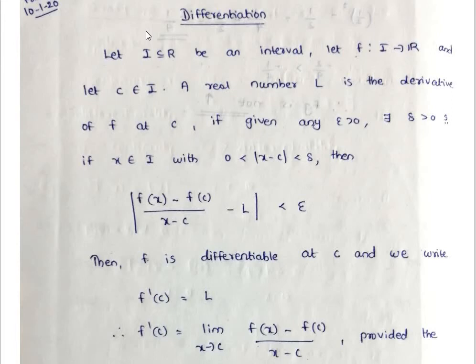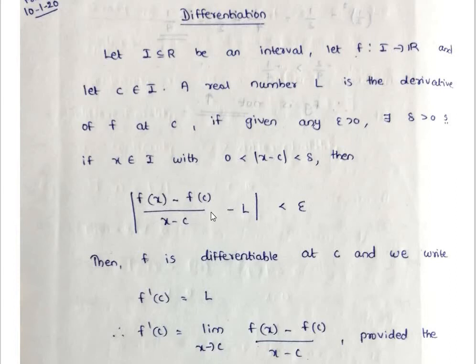First, the definition of a differentiable function. How is a function differentiable? Let I be a subset of R, an interval. Let f from I to R and c be an element of I. A real number l is the derivative of f at c if, given any epsilon greater than 0, there exists a delta greater than 0 such that if x is an element of I with 0 less than |x - c| less than delta, then |f(x) - f(c) / (x - c) - l| less than epsilon. Then f is differentiable at c and we write f'(c) = l.